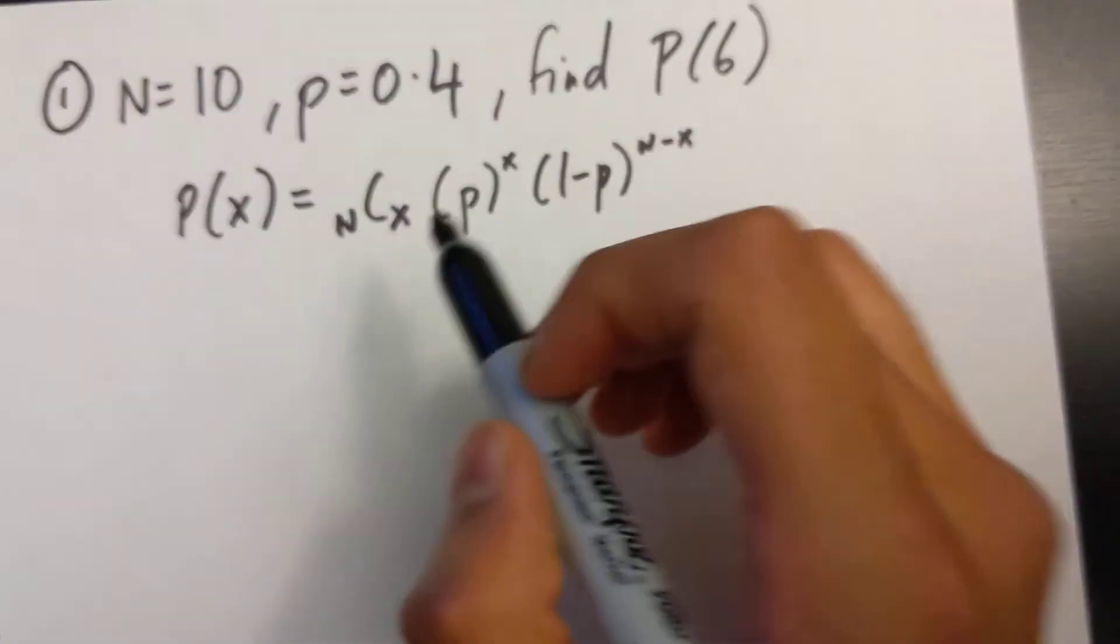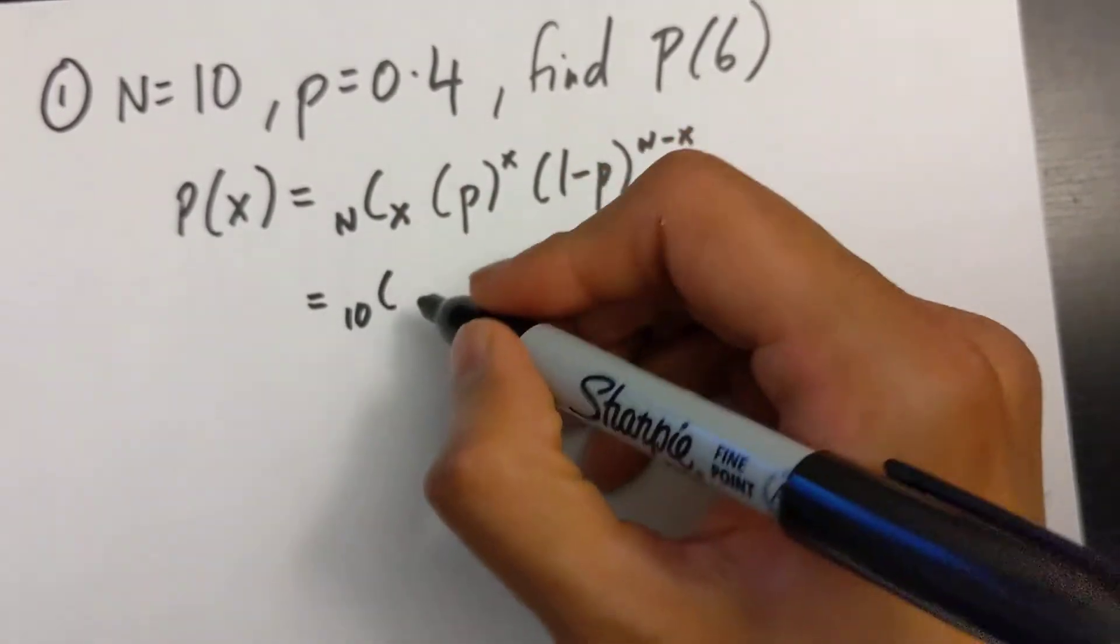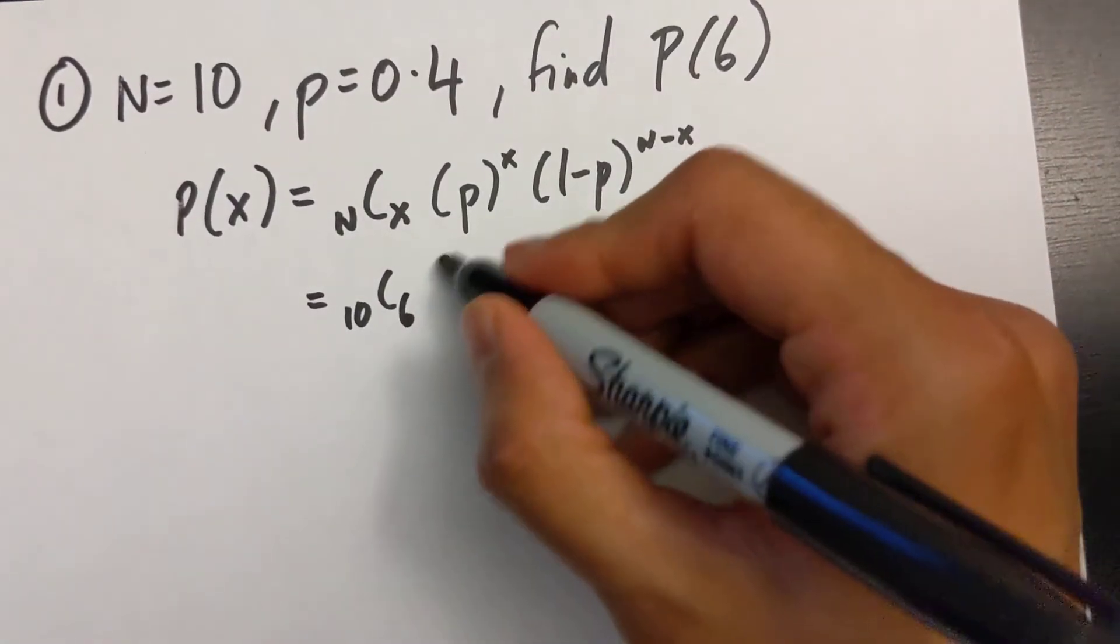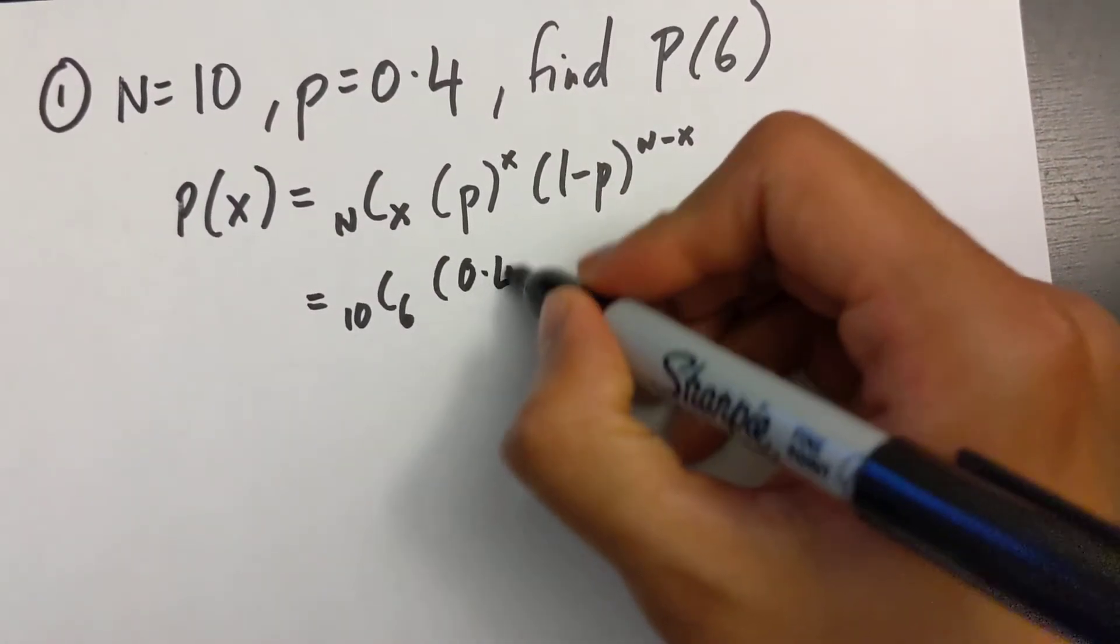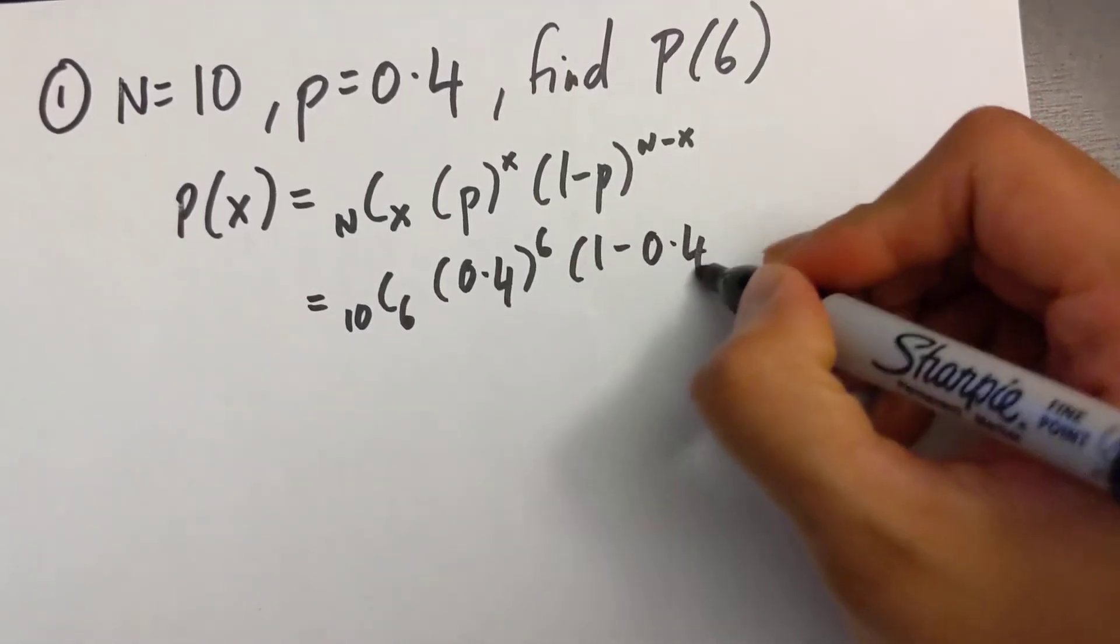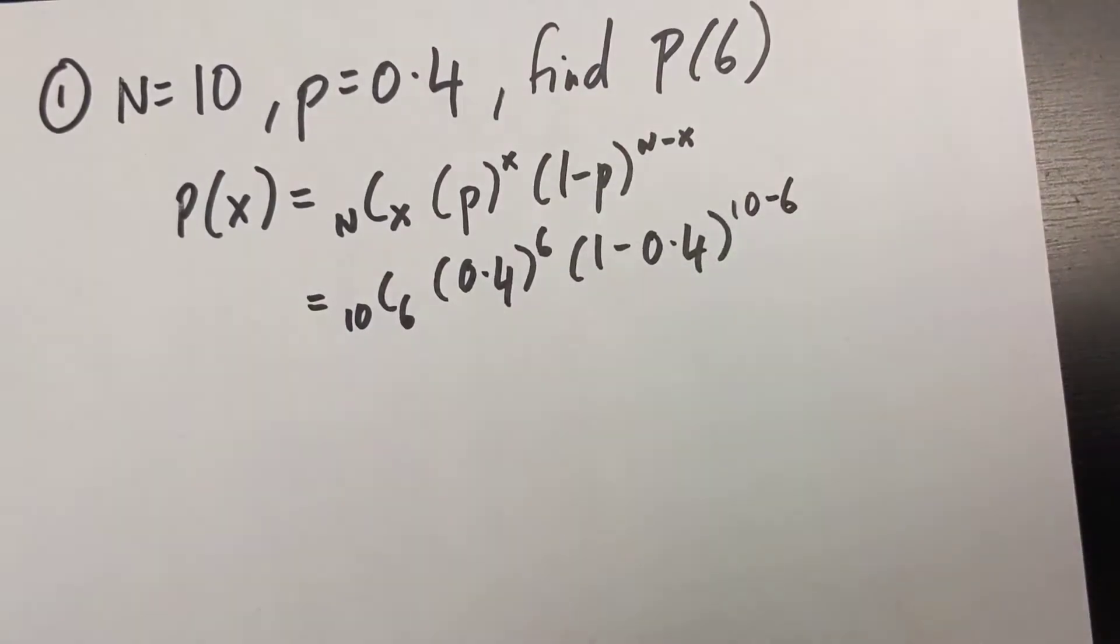I'm going to start by subbing in my values into this equation. So n is 10, so 10C x is whatever's in the bracket, so x is 6, p is 0.4 to the power of 6, and then 1 minus 0.4 to the power of 10 minus 6.